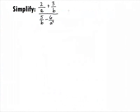In this example, we want to simplify the complex fraction of, in the numerator, 2 over a plus 3 over b, over, in the denominator, 5 over b minus 6 over a squared.